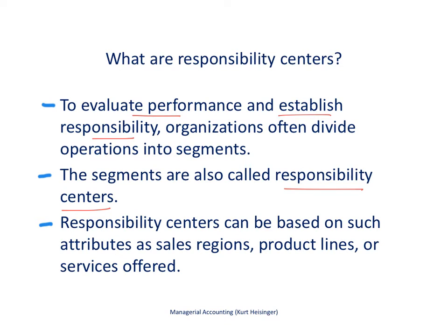Responsibility centers can be based on things like sales regions — we might have a sales group in Southeast Asia, in West Europe, or in the northeastern United States. We could also break responsibility centers out by product lines. For example, if we are Home Depot, we might have a lumber product line, a gardening product line, carpeting, and appliances — so we break out those responsibility centers by product lines, depending on the company.